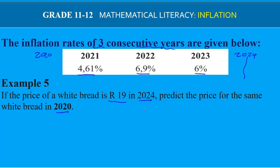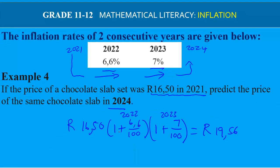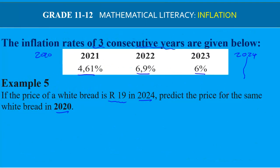When predicting a price in the future, we multiply by a bracket for each year. But when going back in time — from 2024 back to 2020 — we use the inverse operation of multiplication, which is division. So now we divide by a bracket for each year.